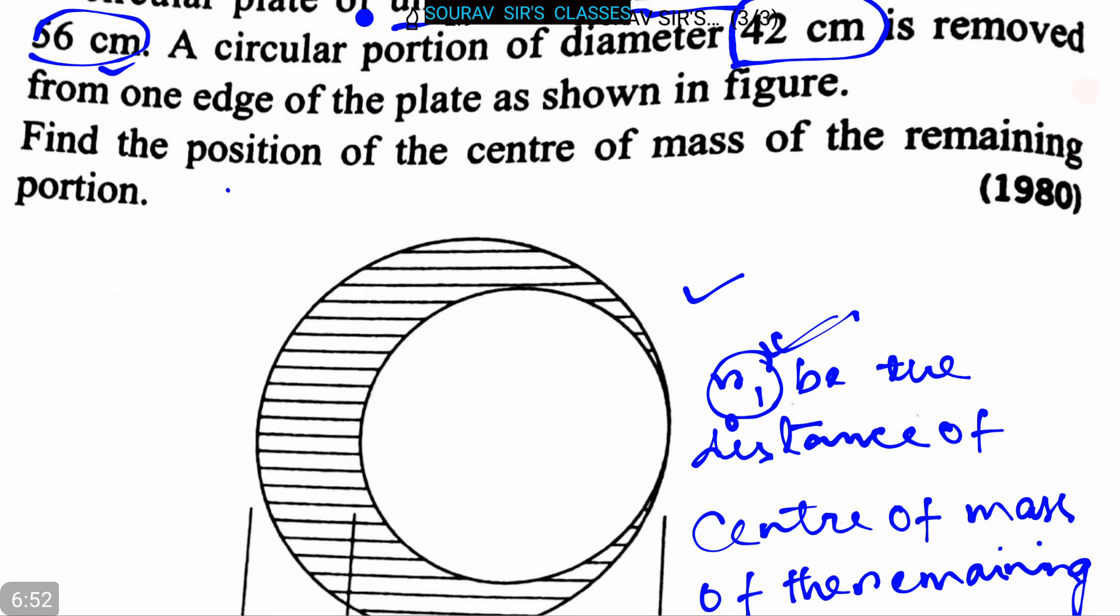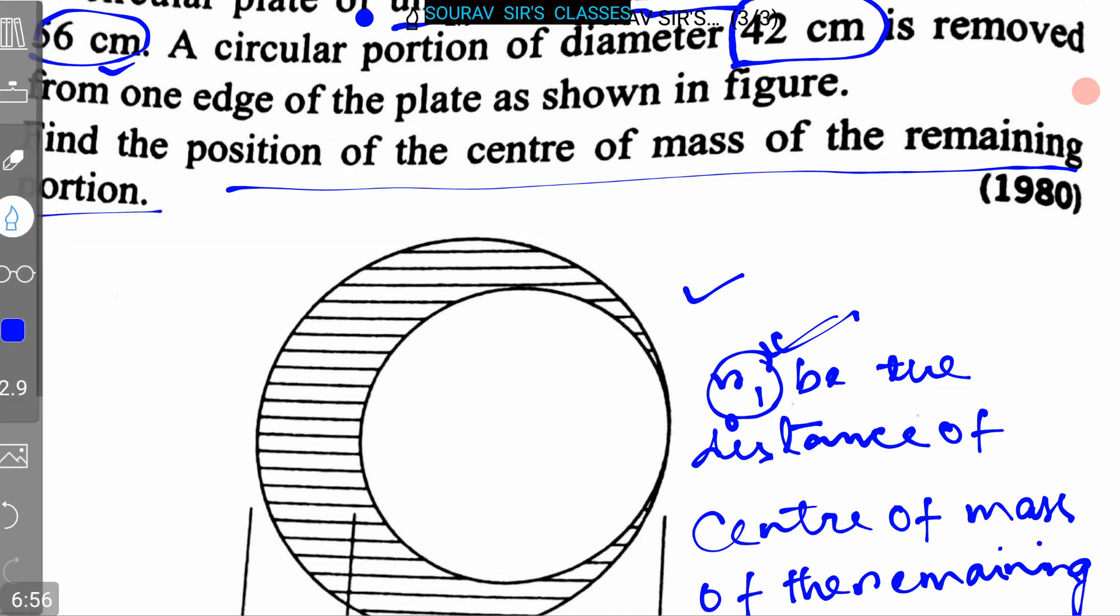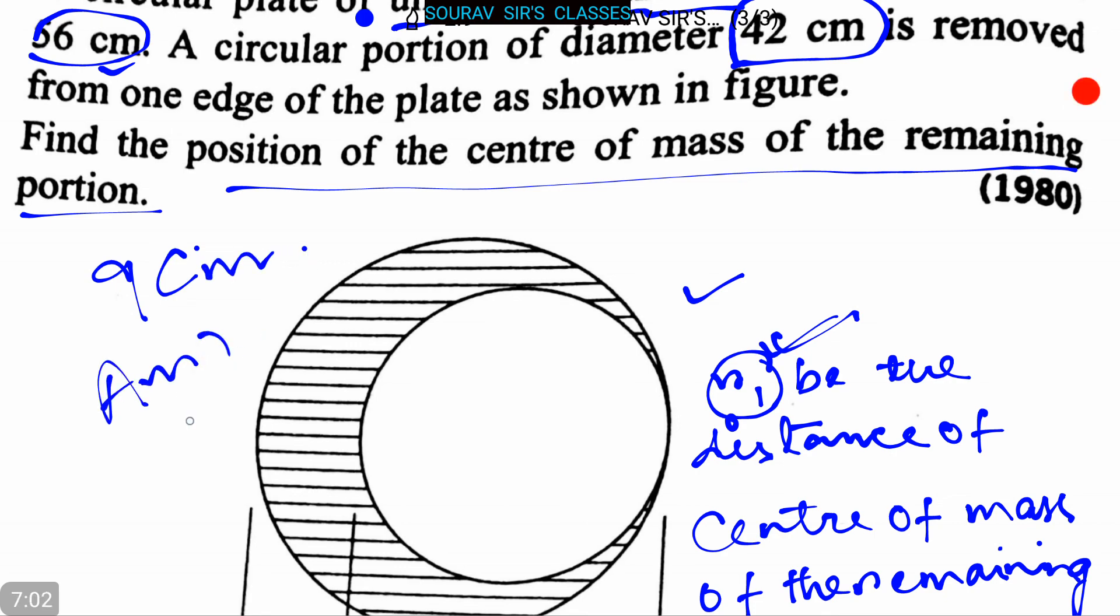By simplifying this we can rewrite it as 9. So r1 equals 9. The position of the center of mass of the remaining portion is 9 centimeter, and this is our answer.